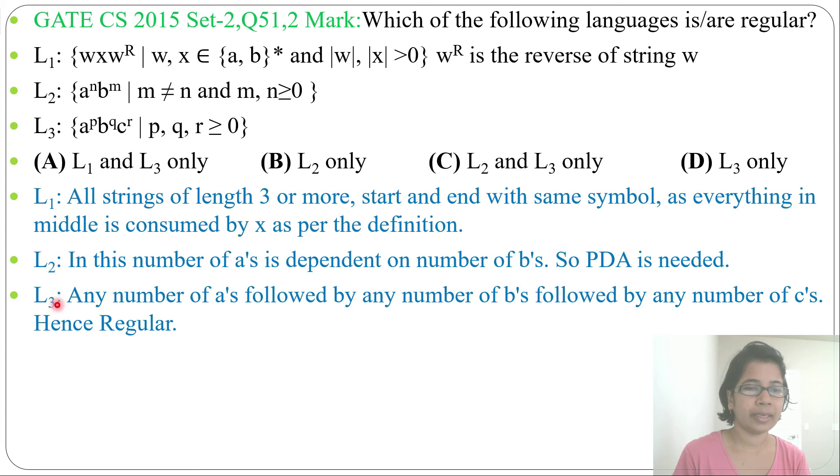We found L1 and L3 are regular. Only L2 is not regular: a^n b^m, m not equal to n, m and n greater than or equal to 0. This is not regular. So let's check in which option L1 and L3 are present. In option A it's present. Answer is A: L1 and L3 only regular. L2 is context-free.